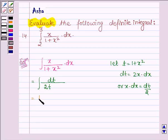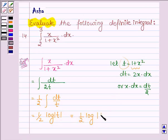Taking 1/2 outside the integral sign, we have dt/t. In place of 1+x², we have substituted t. Now, this is equal to (1/2)log|t|, which is (1/2)log|1+x²|.